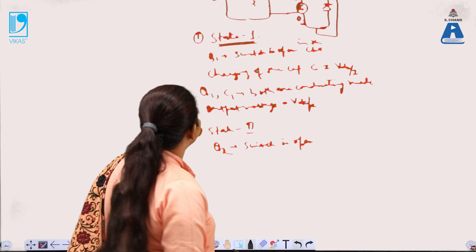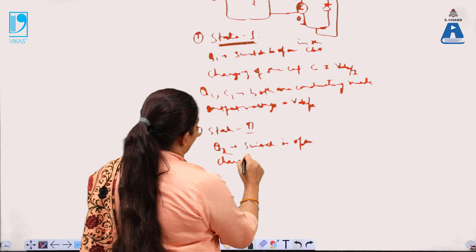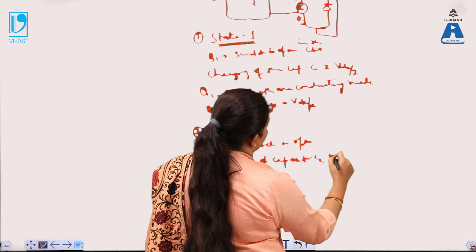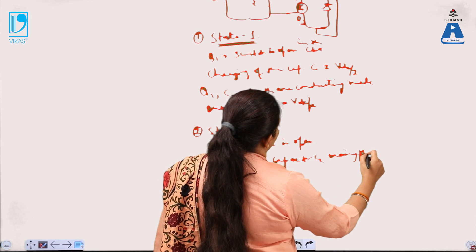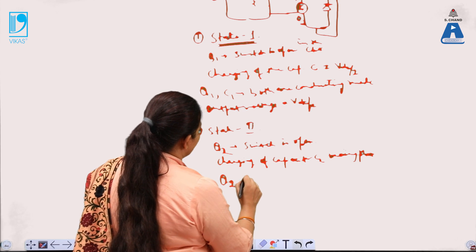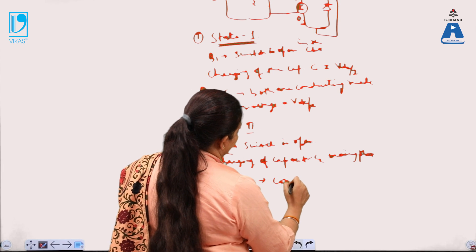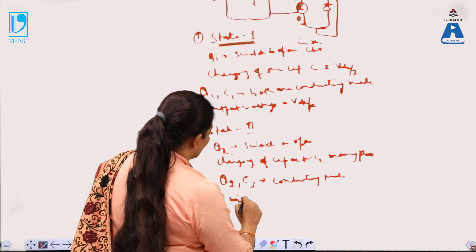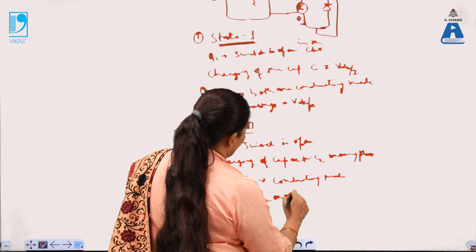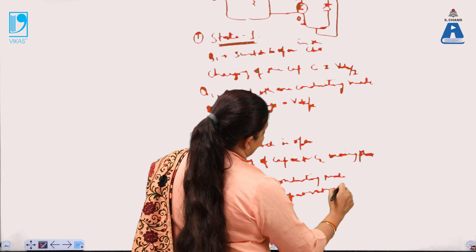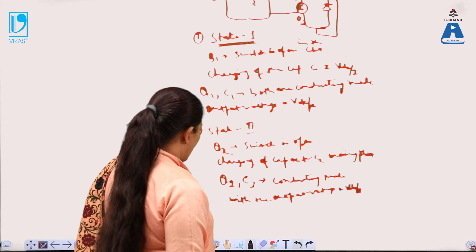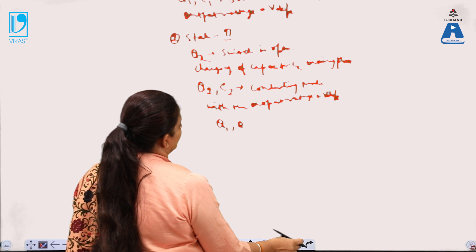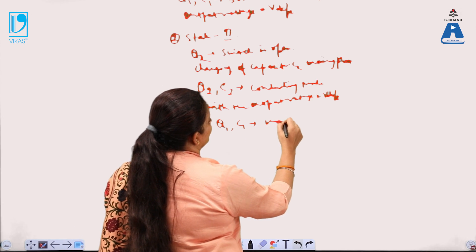In State 2, the second branch is included in the circuit, and charging of capacitor C2 takes place. Q2 and C2 are both in the conducting mode, with the output voltage equal to Vdc/2. Meanwhile, Q1 and C1 are in the non-conducting mode.